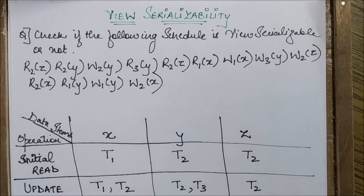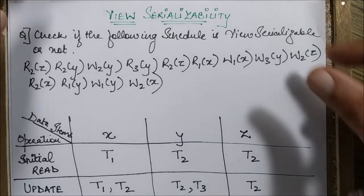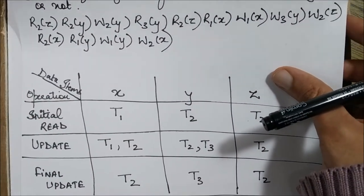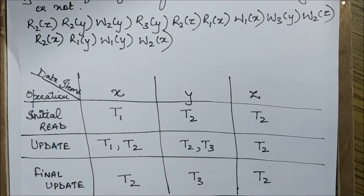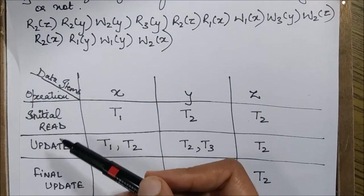So let's start with this question. Conflict serializability we have already discussed. For view serializability, you already know there are three important conditions which we need to check: initial read, update, and final update.